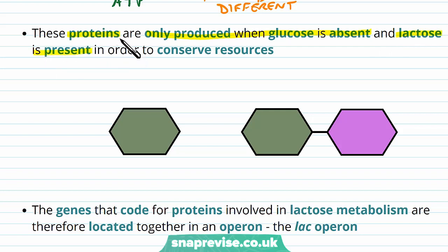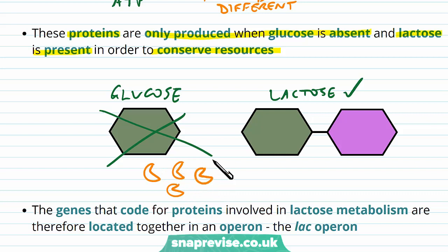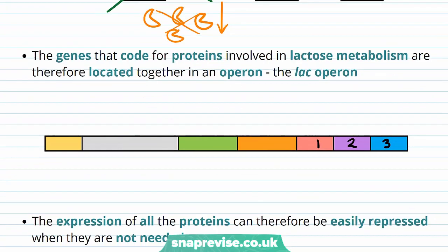These proteins are only produced when glucose is absent and lactose is present. The reason for this is it conserves resources. For example, if glucose was absent and lactose was present, there's no point in making enzymes that metabolize glucose — it's a waste of amino acids and energy. So if there's no glucose, we don't make those enzymes; we only make those referred to lactose metabolism. The genes that code for the proteins for lactose metabolism are located together in a group, therefore in an operon.